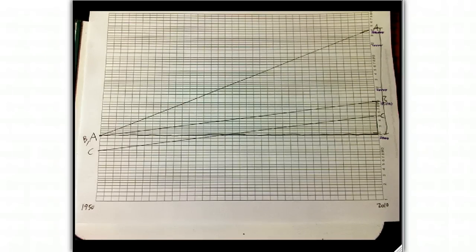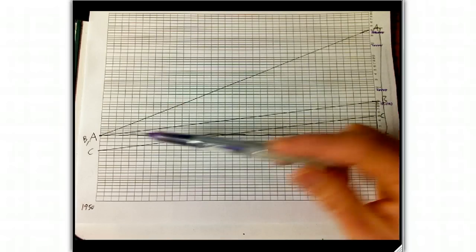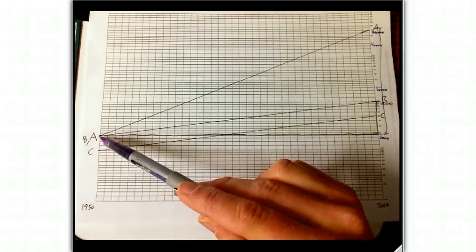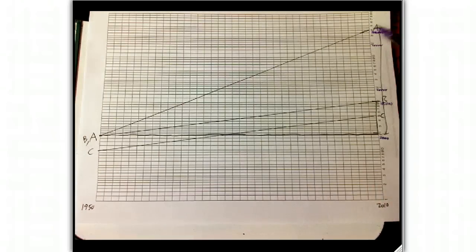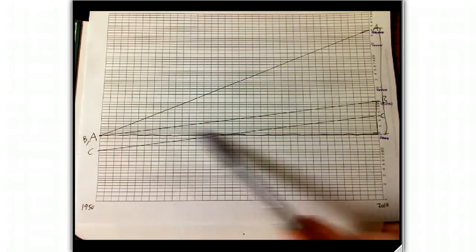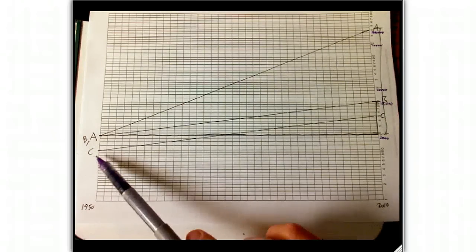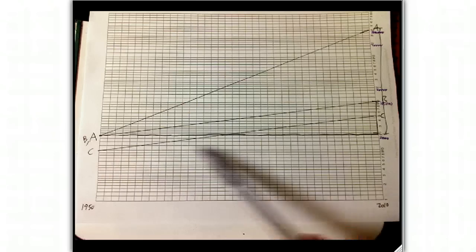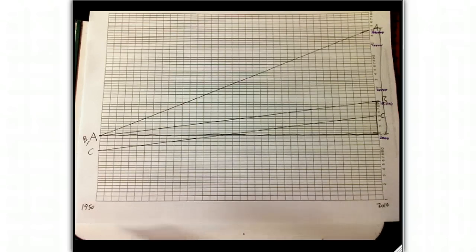Here's a quick problem about semi-log graphing that we did in class today. Here's a graph of three investments. A starts from here and goes up to here. B starts with the same initial investment and goes over to here. C starts lower and ends up lower over the period from 1950 to 2010 — 60 years.